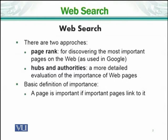When we talk about web search, there are two approaches that are commonly used. The first approach is PageRank. PageRank means we try to discover the most important pages on the web. This is the technique that Google uses, which is of course one of the most used search engines on the internet.